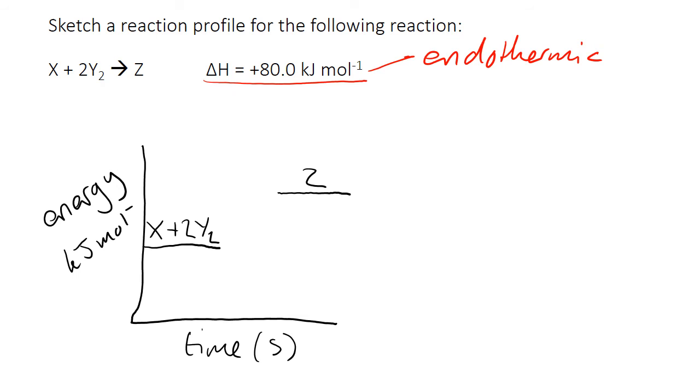So here is that, and just like before we need to put some energy in to reach the activation energy, and then energy will be released as new bonds are formed making Z. So if we go up, curve at the activation energy, coming down to Z.